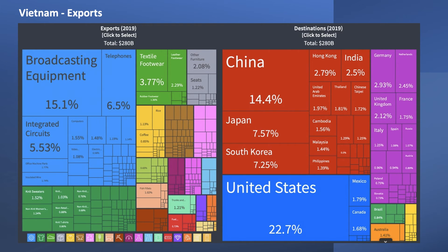In 2019, Vietnam was developing similar patterns. They are the 44th biggest country in the world by GDP but the 20th biggest exporter, and they are increasingly becoming more complex over time. They are building competitive, scaled capabilities and advantages in industries such as manufacturing and assembly of broadcasting equipment and textiles, helped in part by an inflow of foreign direct investment.